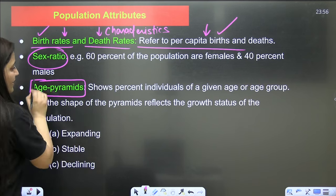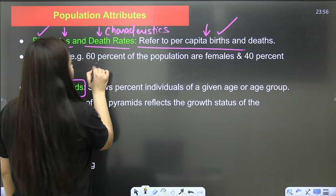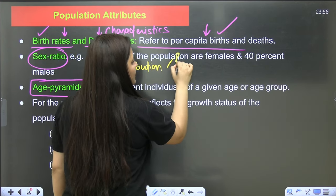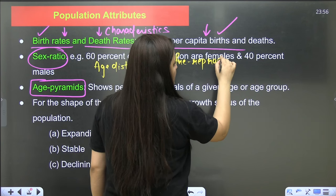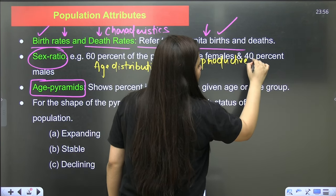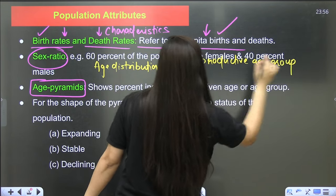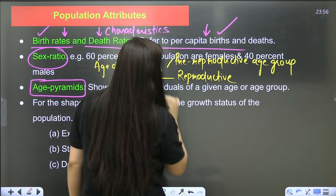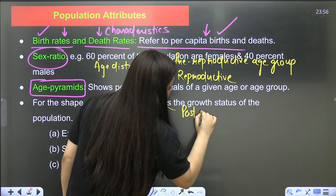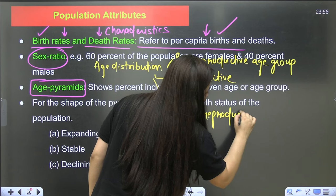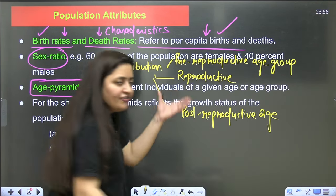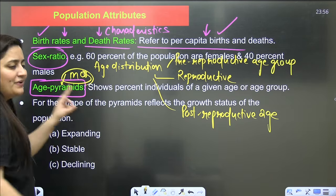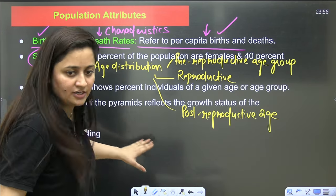Then comes age pyramids. Before that, we talk about age distribution. Individuals are divided into: pre-reproductive age group (those who are not reproducing), reproductive age group, and post-reproductive age group. That is how age is distributed, and the graphical presentation of it is known as the age pyramid.